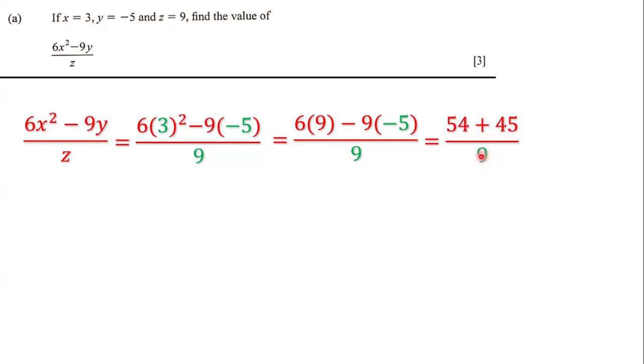That's what we have on the denominator. So the numerator, we have 54 plus 45, and in the denominator, we have 9. And so 54 plus 45 is definitely 99, and in the denominator, we have 9.